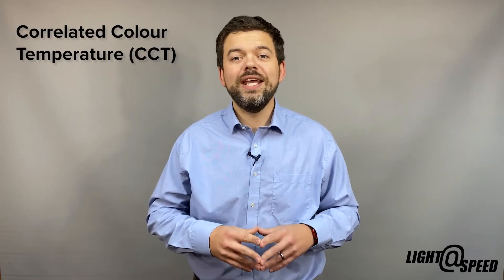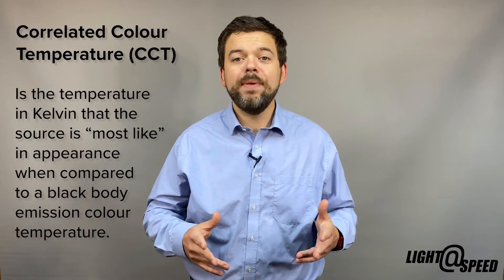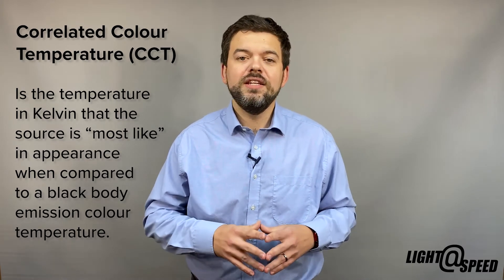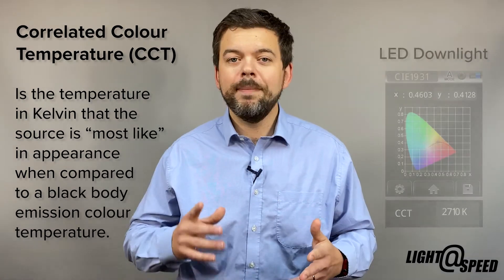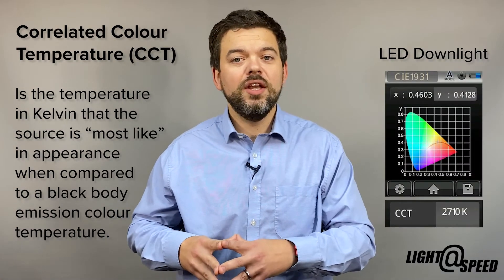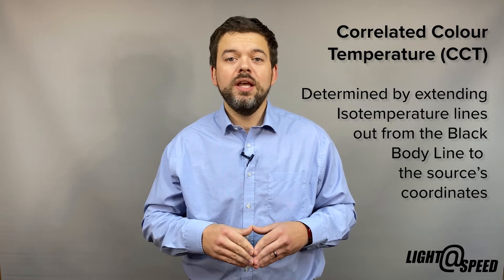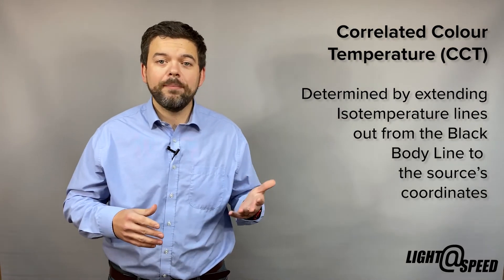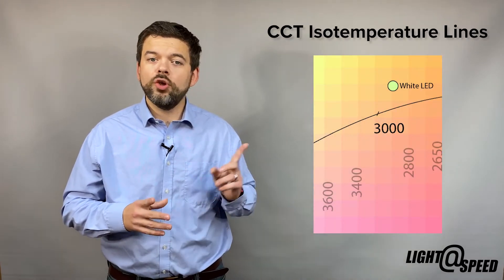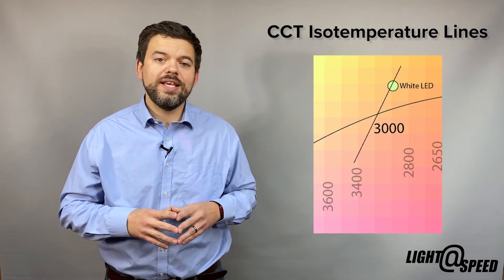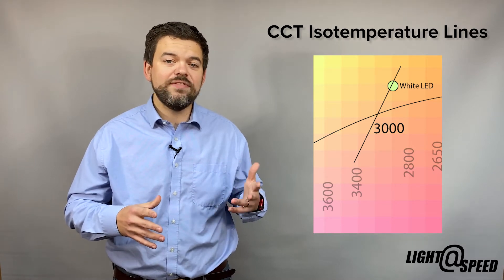This is where correlated colour temperature or CCT helps. Correlated colour temperature is a measure of a light source's colour appearance defined by the proximity of its chromaticity coordinates to the black body line, but it's given as a single number in degrees Kelvin rather than the two chromaticity coordinates. The correlated colour temperature of a light source can be determined by extending isotemperature lines from the black body line out to the chromaticity coordinates of the source. For example, the plotted point above the black body line lies on the 3000 Kelvin isotemperature line. Thus, the light source has a CCT of 3000 degrees Kelvin.